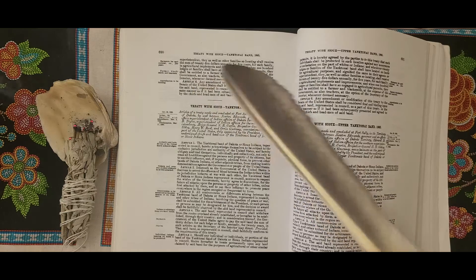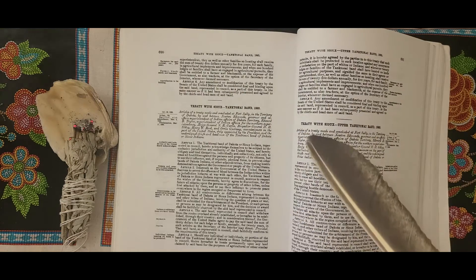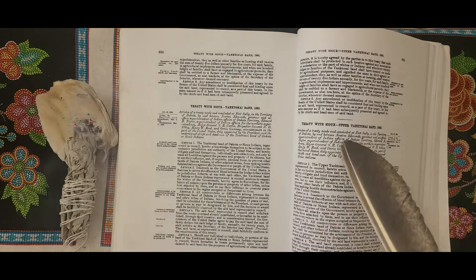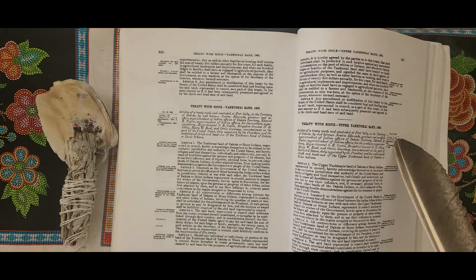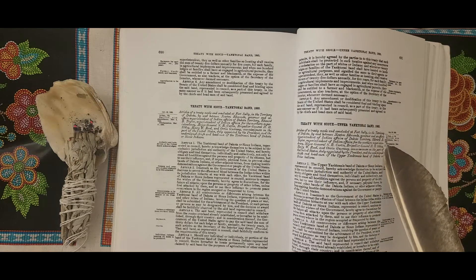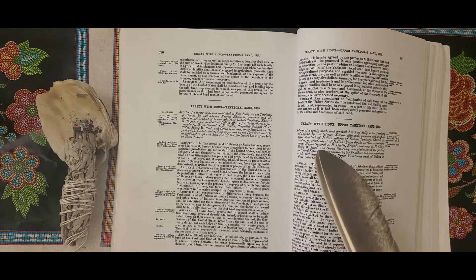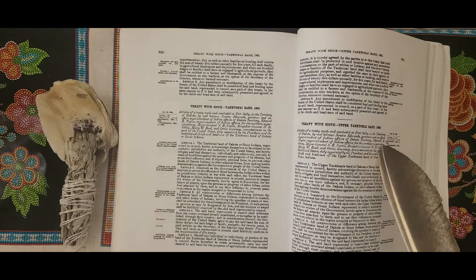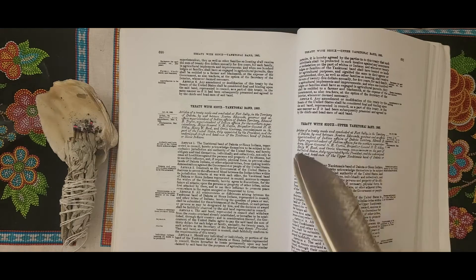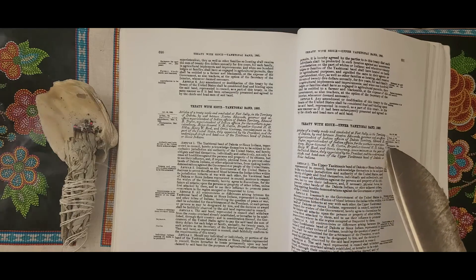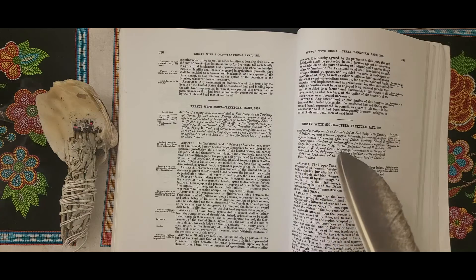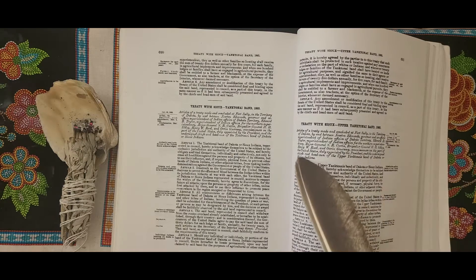Treaty with the Sioux, Upper Yanktonai Band, October 28, 1865, ratified March 5, 1866. Articles of a treaty made and concluded at Fort Sully in the Territory of Dakota by and between Newton Edmunds, Governor and ex-officio Superintendent of Indian Affairs of Dakota Territory, Edward B. Taylor, Superintendent of Indian Affairs for the Northern Superintendency, Major General S.R. Curtis, Brigadier General H.H. Sibley, Henry W. Reed, and Oren Guernsey, commissioners on the part of the United States, duly appointed by the President...